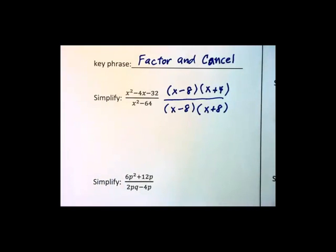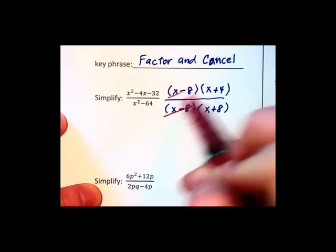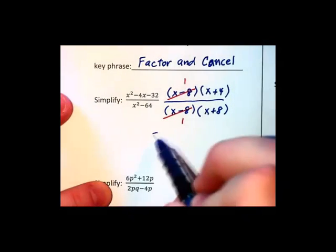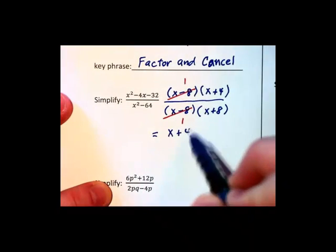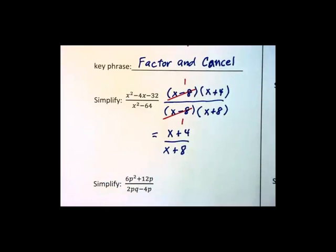You get parentheses times parentheses in most cases. It's these parentheses, these factors, that are then cancelable. So we have a final answer in this case of (x+4)/(x+8). That's as far as we can go in this problem.